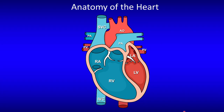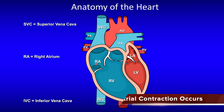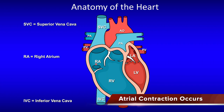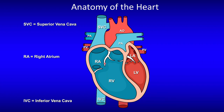We know that Deoxygenated Blood enters the Heart via the Superior and Inferior Venacava. The Blood enters the Right Atrium and from the Right Atrium, Blood passes through the Tricuspid Valve into the Right Ventricle. Remember, the RI in Tri reminds you that it is on the Right side.